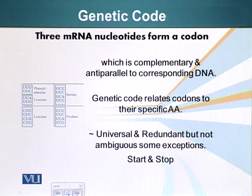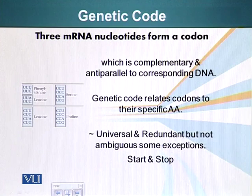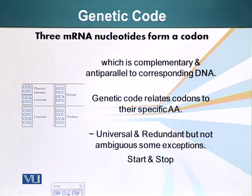Three adjacent nucleotides of the messenger RNA specify a particular amino acid. Genetic code relates codons to their specific amino acids in proteins.